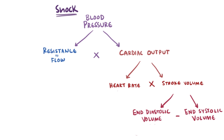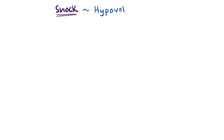Shock can be caused by many different things, but we can categorize the types into three main categories with some subcategories. The first is hypovolemic shock — hypo means low, vol refers to volume, and emia refers to blood. So hypovolemic shock is shock induced by a low fluid volume of blood, and it can be either non-hemorrhagic or hemorrhagic.